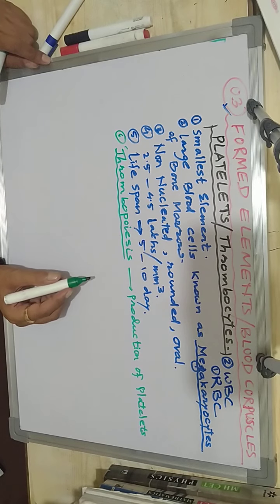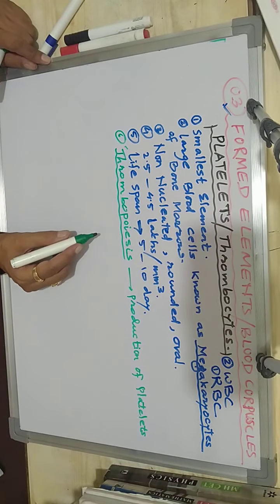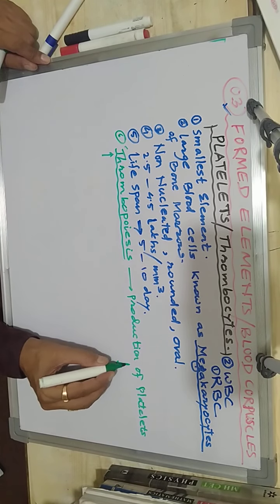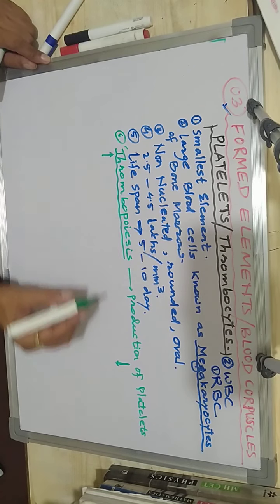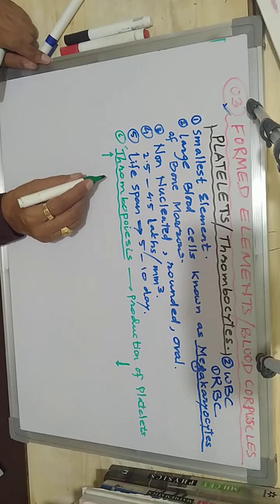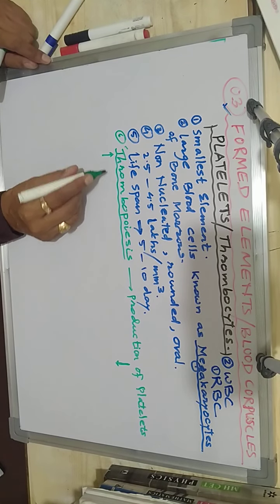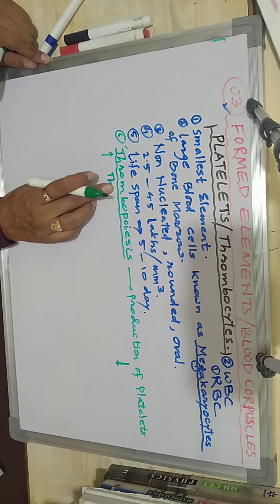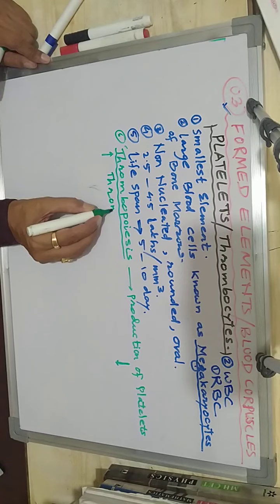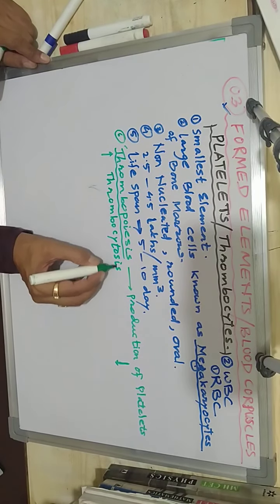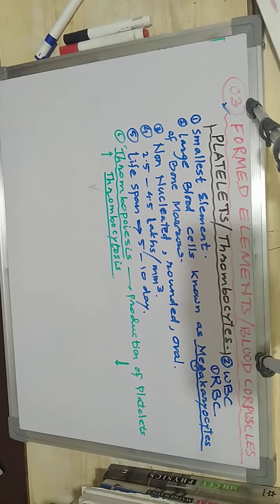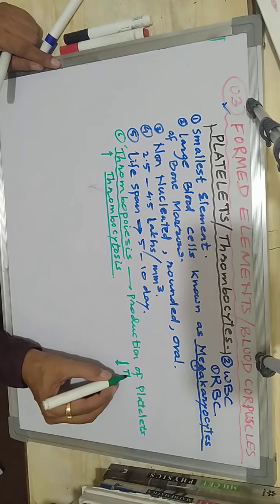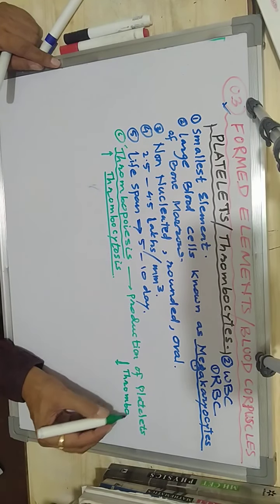When you observe the production of thrombocytes, there are two major types. In some individuals production may increase and in others it may decrease, depending on infection. If the total number of platelets increases, then the term is described as thrombocytosis.